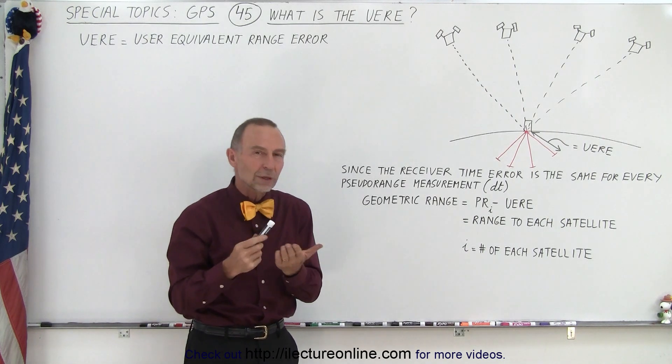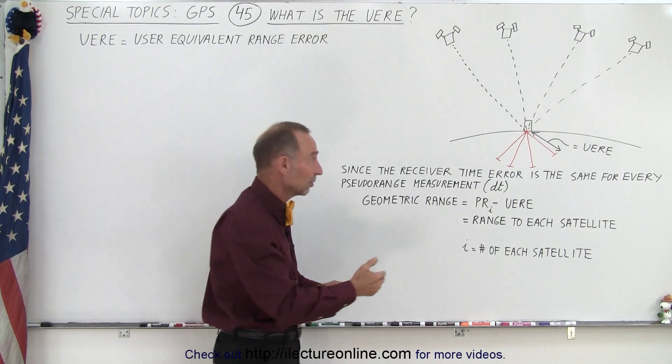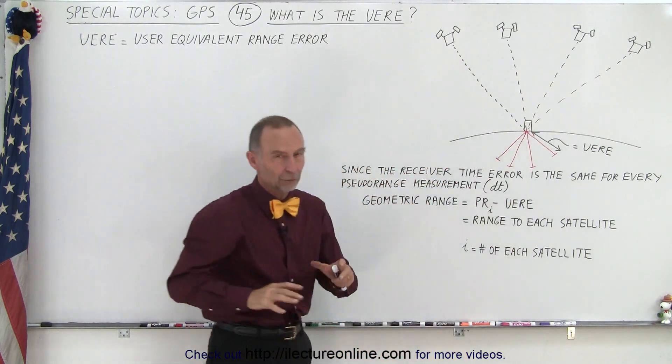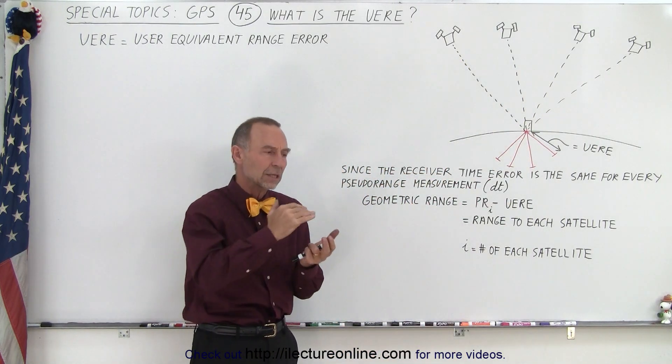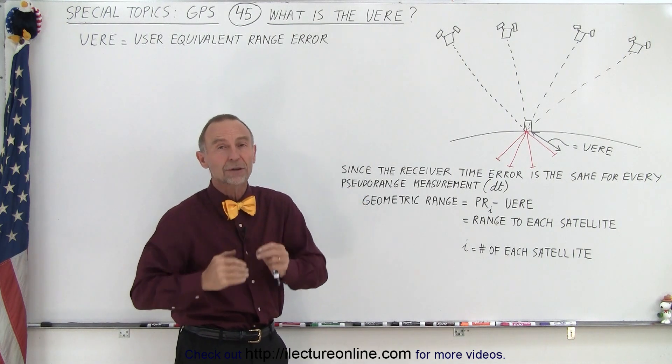Essentially, since we can count down the same clock error for the receiver in every measurement, because it's the same receiver that's trying to find the distance to each satellite, and of course since we assume that the clocks of the satellites are all fairly close to one another, and therefore a relatively small part error.